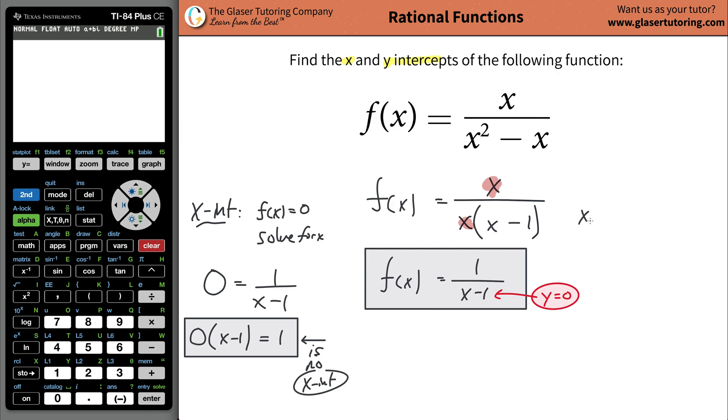Then to solve for the y intercept now, to solve for the y intercept, you're going to do the same process, but opposite. Instead of setting f of x equaling 0, you're going to set all of your x values equal to 0. And then what you're going to do is you're going to solve for now f of x. Solve for your f of x.